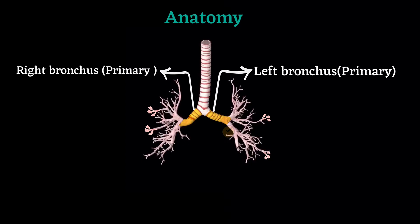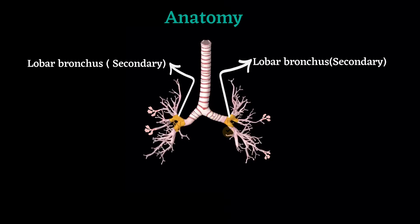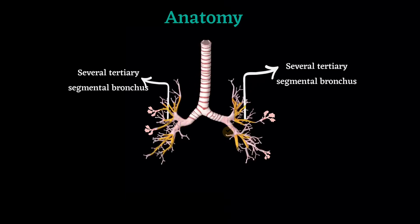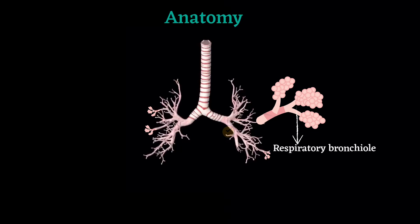Inside the lung, they divide to form lobar bronchi, each supplying each lobe. Each lobar bronchus then further divides into several tertiary segmental bronchi. The segmental bronchi give rise to many conducting bronchioles, which eventually lead into terminal bronchioles. Each terminal bronchiole gives off respiratory bronchioles, which feature thin-walled outpocketings extending from the lumens.